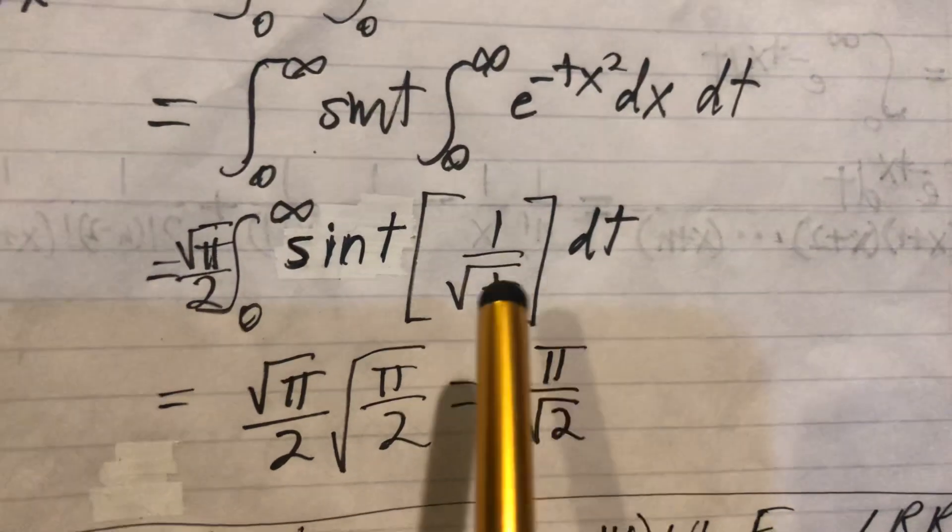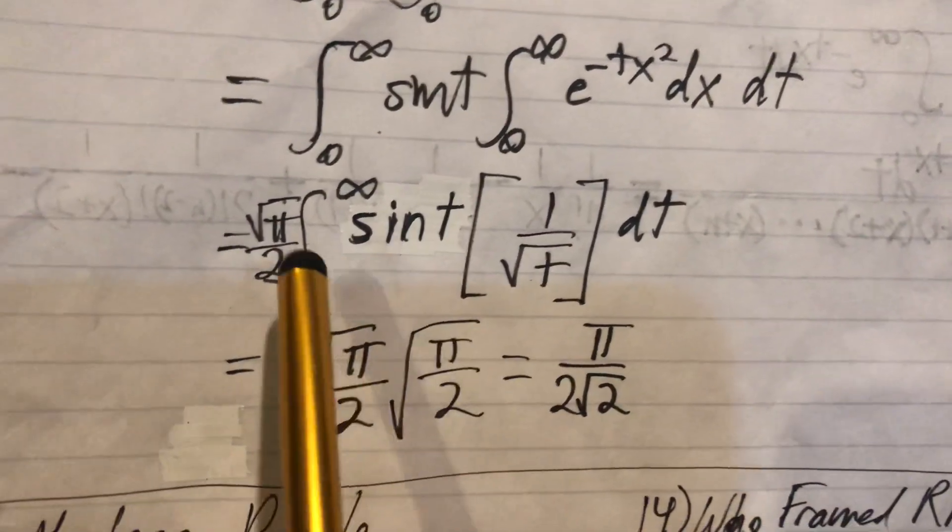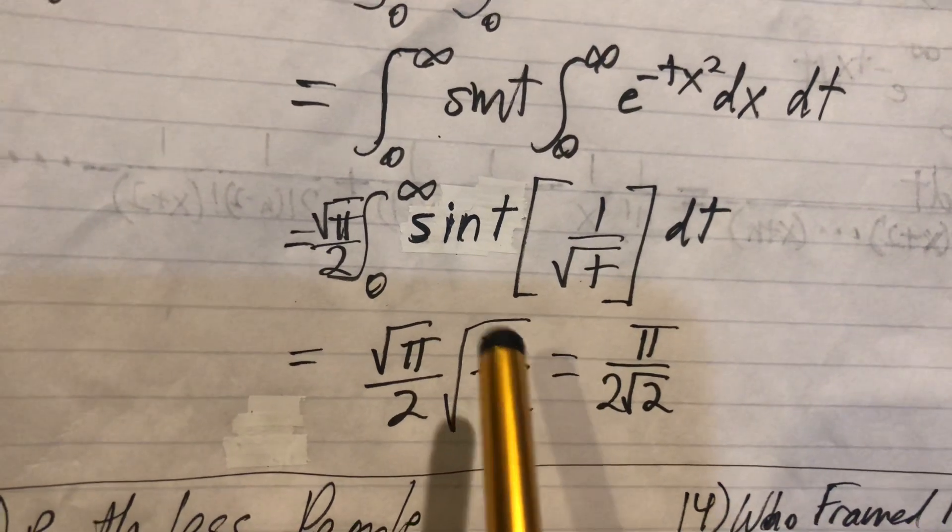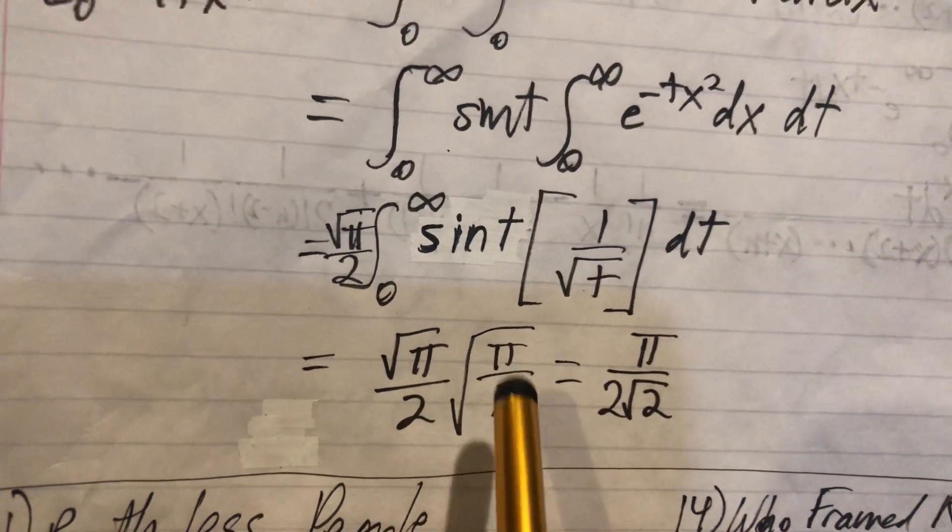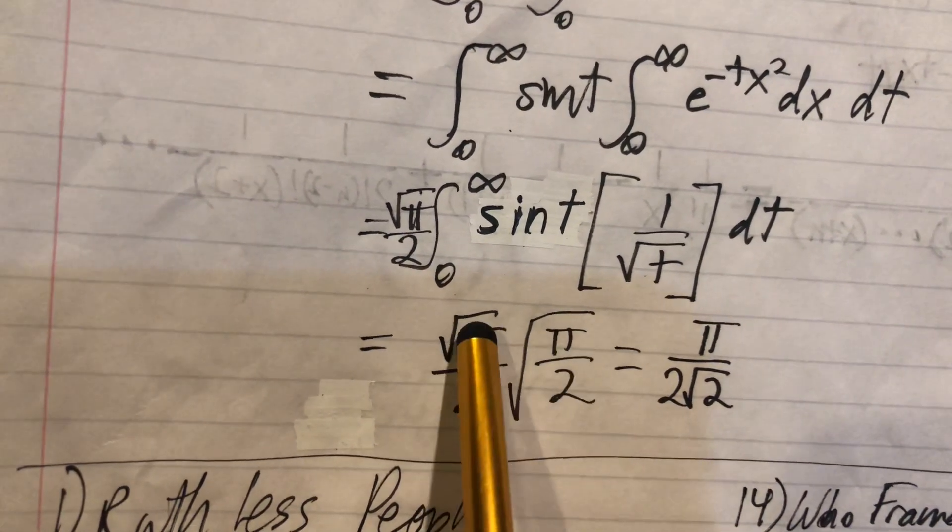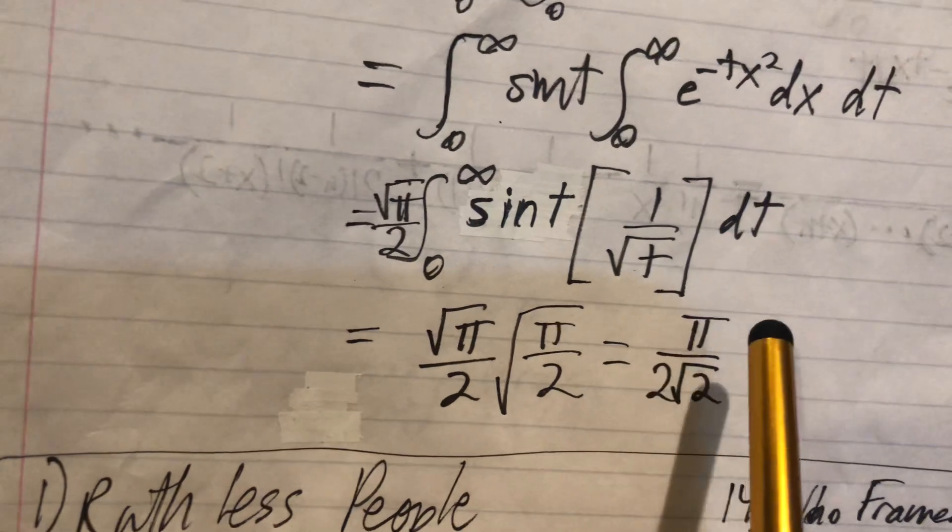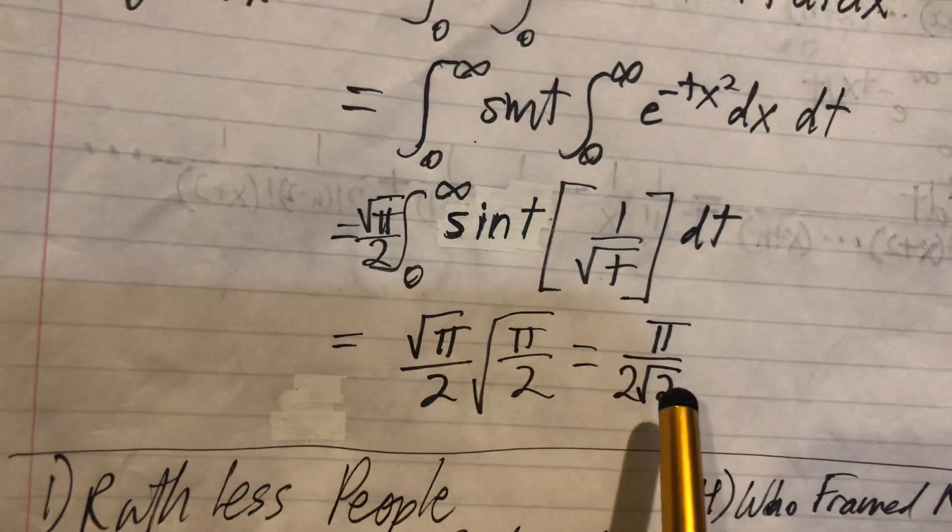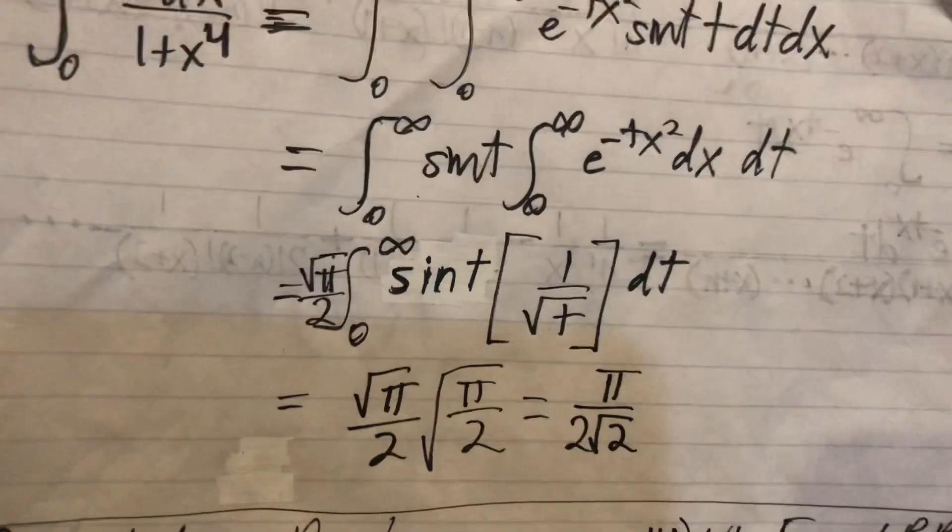The constants can come out front. It turns out the integral of this is just square root of pi over 2 for the whole thing. So these two square roots combine to give you just pi to the first power, and then we got 2 times root 2, which is the answer.